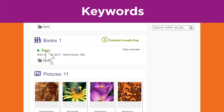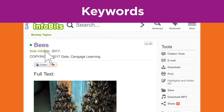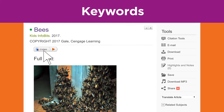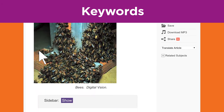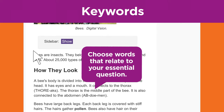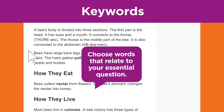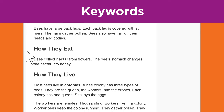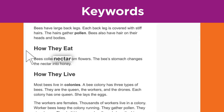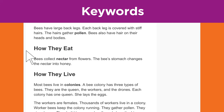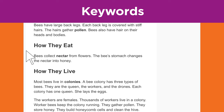Let's explore one of the articles that we found. As you read an article, you often discover new keywords to add to your list. Remember to choose words that relate to your essential question. For example, in this article, nectar stands out as an important word to understand for your knowledge of bees; however, it does not support the essential question — how do bees work as a community — so you wouldn't write it down.